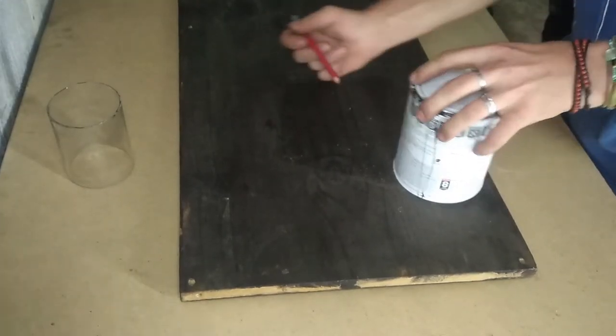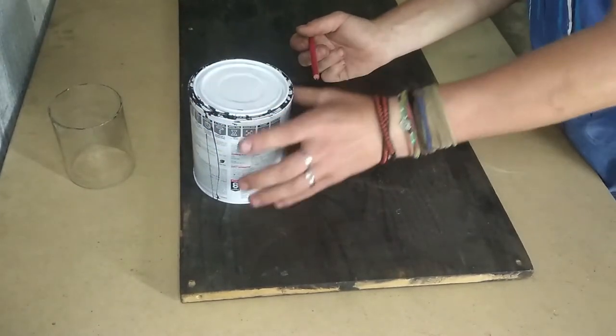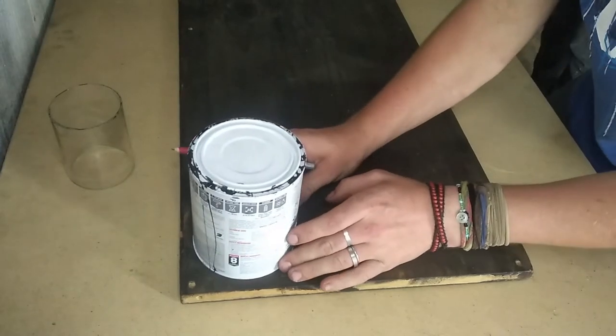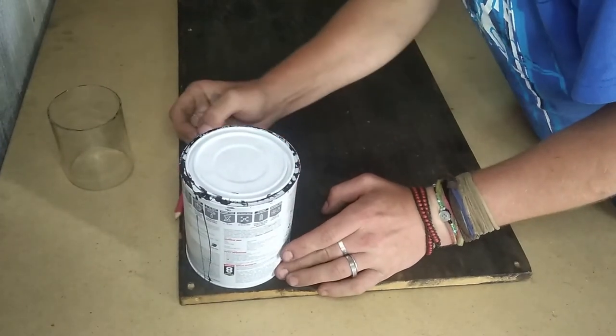We found a paint can that was about four centimeters wider than the glass and we used this to lay out a circle to cut out for our base and our top.